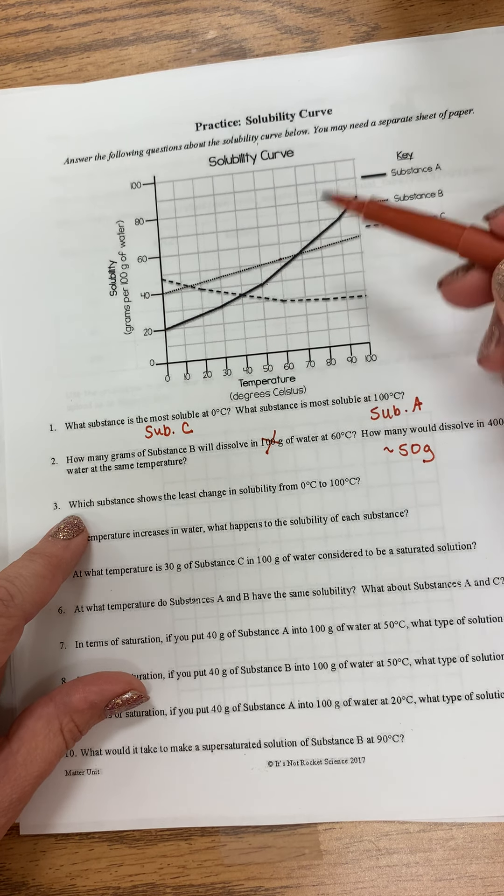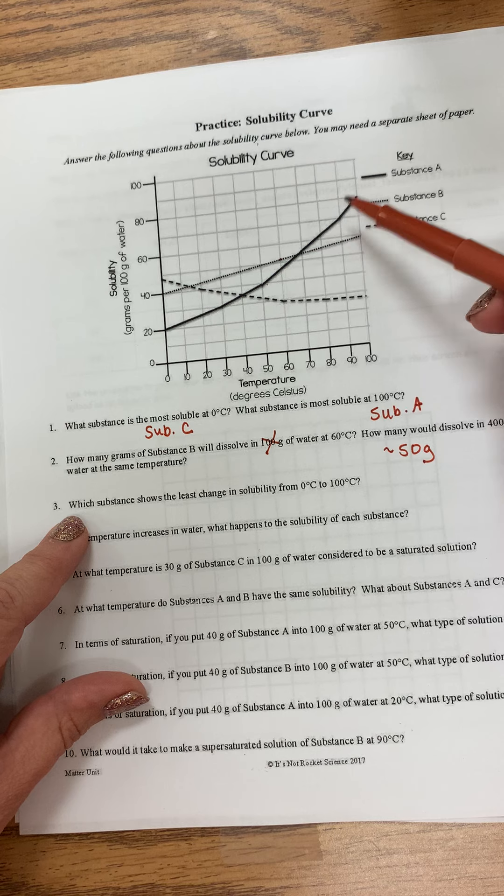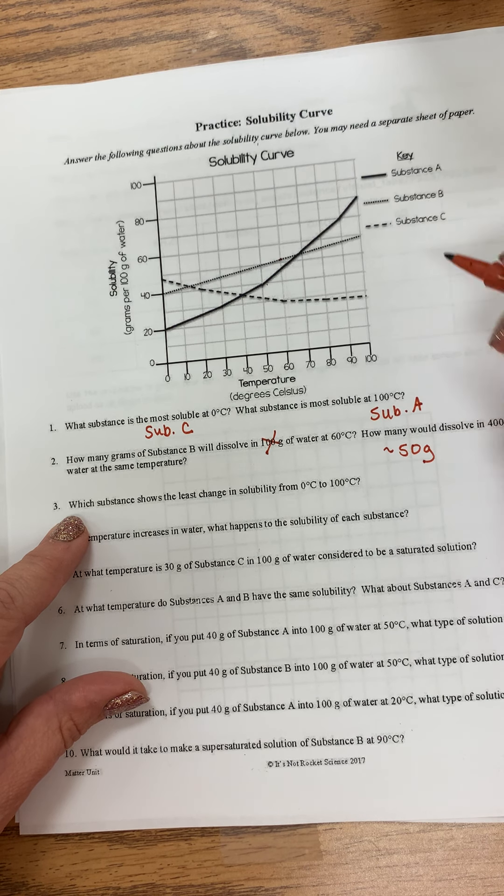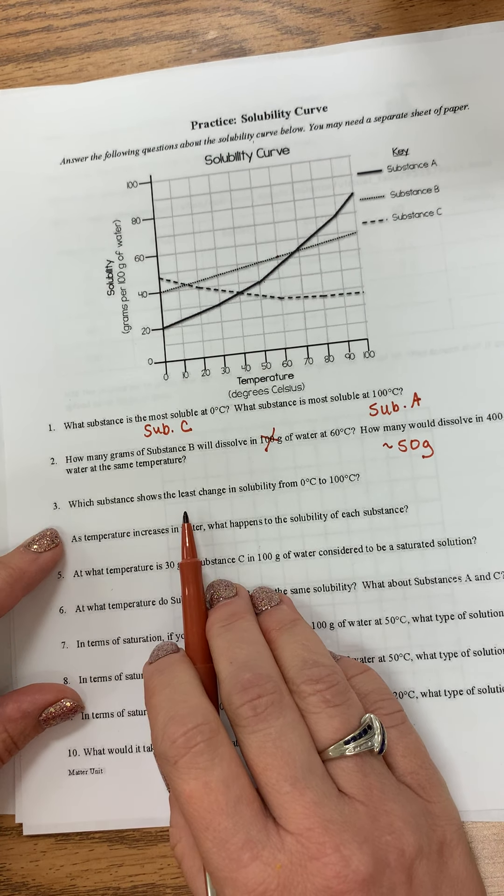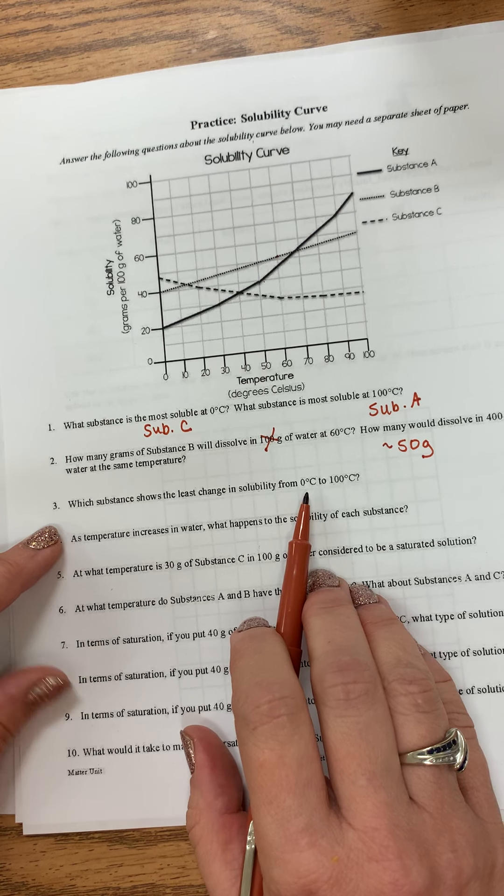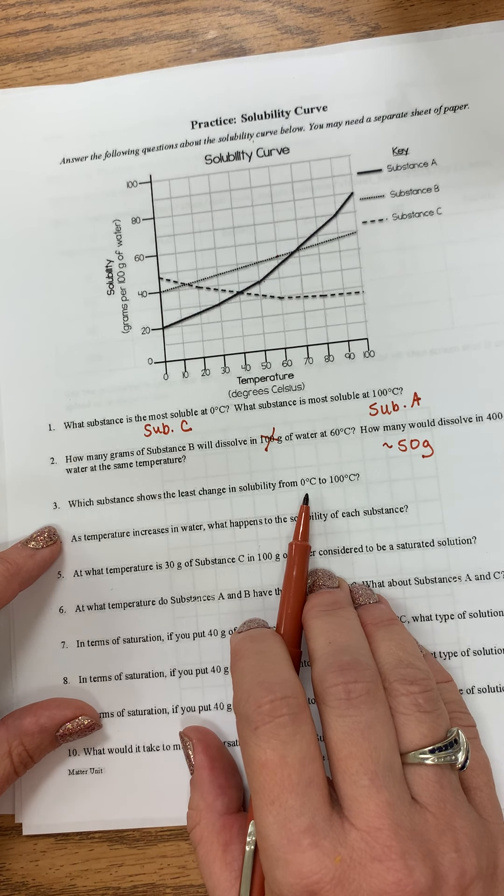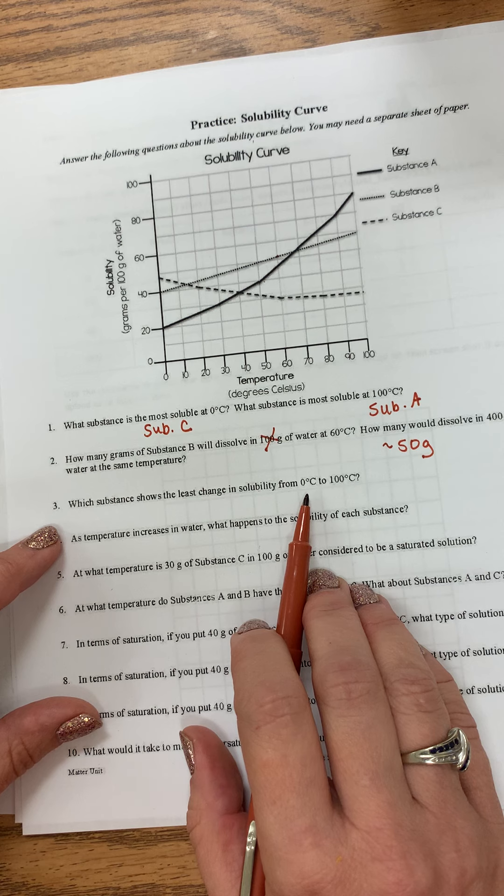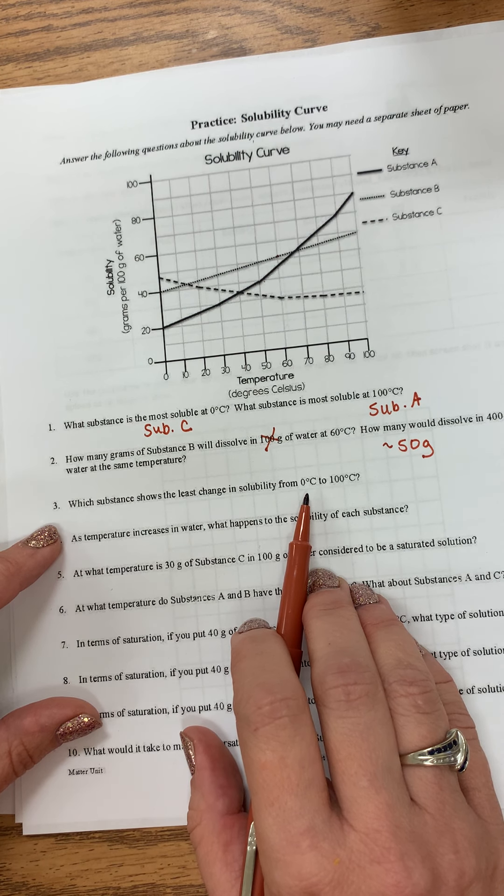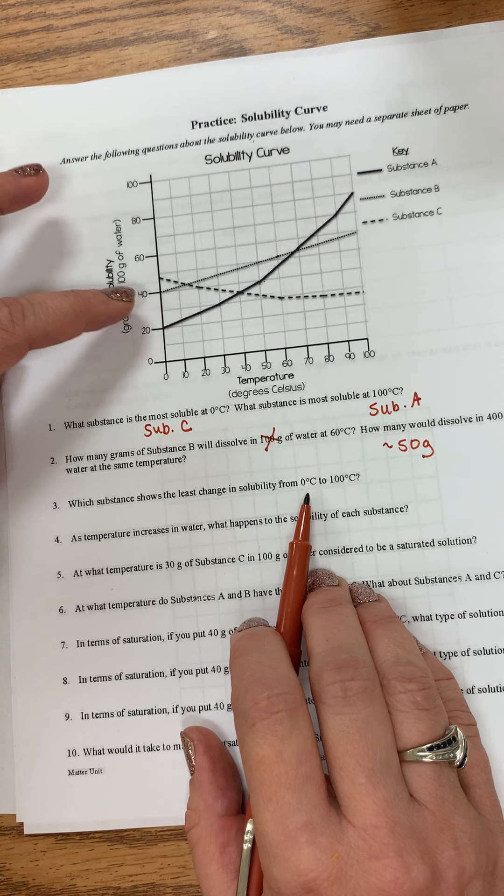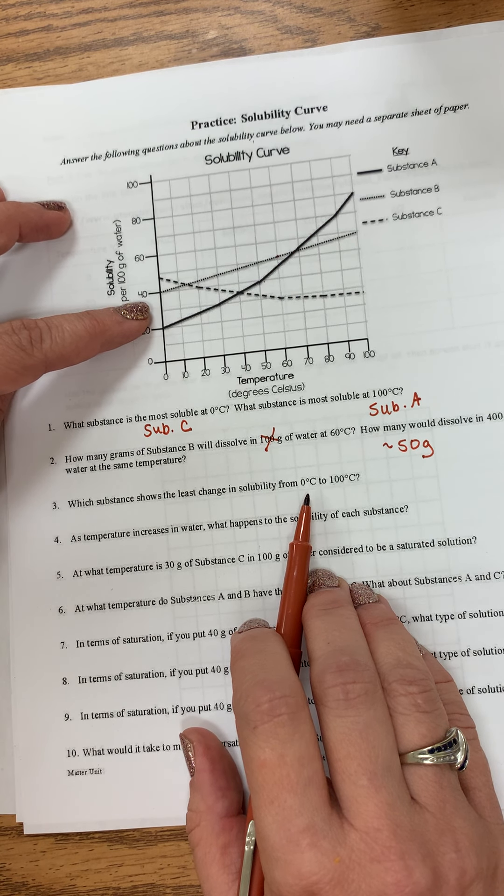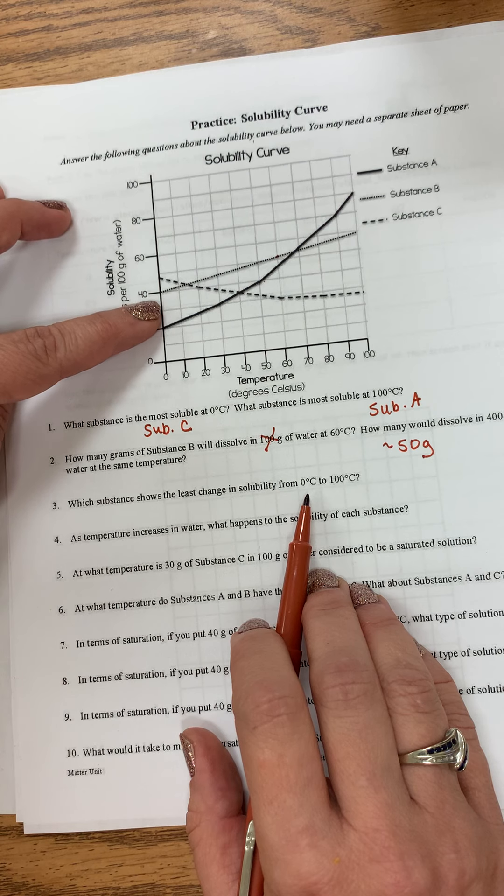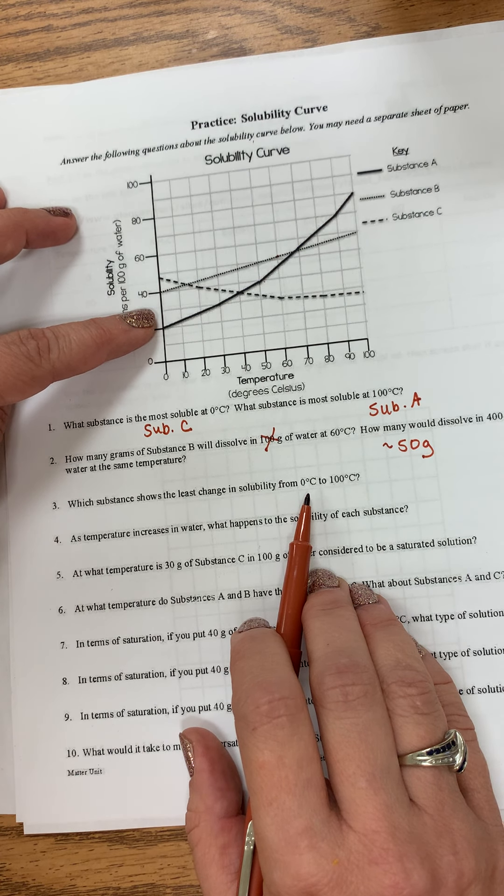So that's how you will do this solubility graph here. So you're going to read this and read the graph. It's either going to be asking for a temperature, a substance, or a gram. So let's look at number three. Which substance shows the least change in solubility from zero to a hundred? Well the least change is going to be the straightest line. And so you can do it mathematically, or you can, this one's easy to look at.